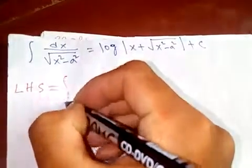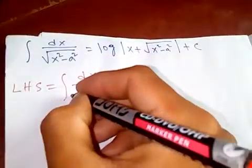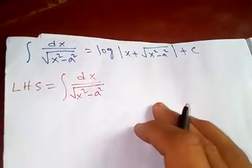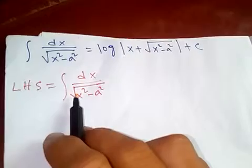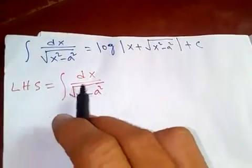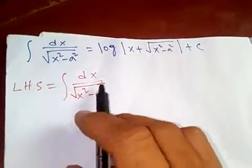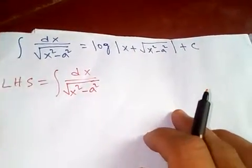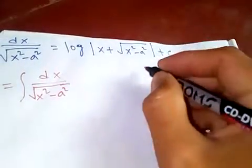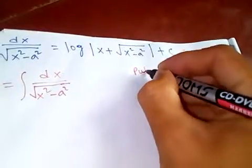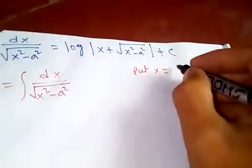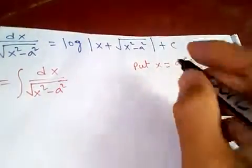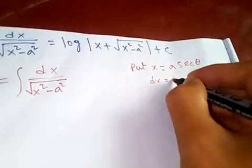Let's start from the left-hand side: dx over square root of x squared minus a squared. Now, in order to come out from this square root, what we need to do is use the substitution method. So put x equal to a sec θ, so dx will be...